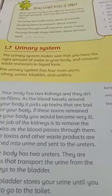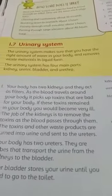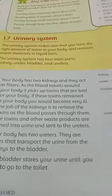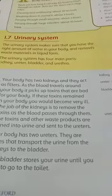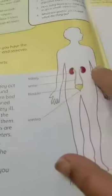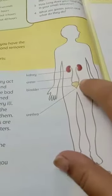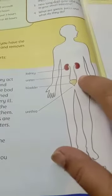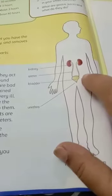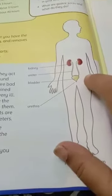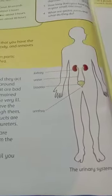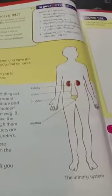Our kidneys perform this function: they remove the toxins from the blood. The blood then re-enters the blood vessels, whereas the toxins and other waste are changed into urine and passed out through the urethra, collected in the bladder. After intervals, this urine is passed out when you need to go to the washroom.